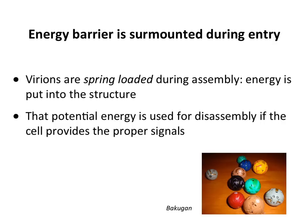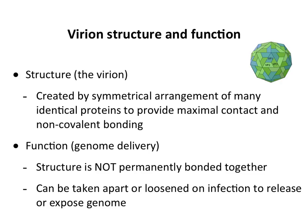The virus hits the right cell, it will spring open and release the genome. The energy was put into the particle during assembly and stored there. Only when the virion hits the right cell — the right receptor, the right intracellular environments — will it pop open and release the genome. All the energy stored in the bonds initially during assembly represents that free energy state, and when it uncoats it reaches the lower free energy state.